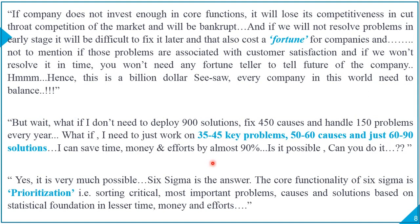But wait — what if I don't need to deploy 900 solutions, fix 450 causes, and handle 150 problems every single year? What if I only need to work on 50 to 60 different causes and just 60 to 90 solutions? I can save almost 90 percent of time, money, and efforts. Is it possible? Yes, it is. Six Sigma is the answer. The core functionality of Six Sigma is prioritization — sorting the most critical problems, causes, and solutions based on statistical foundations, in much lesser time, money, and effort.